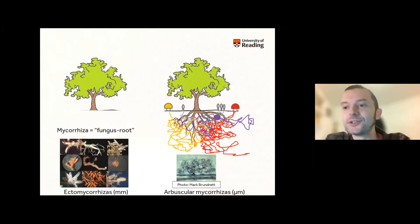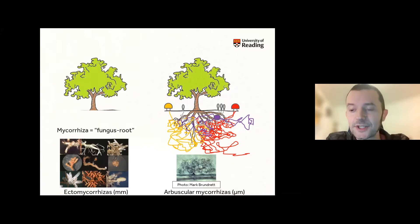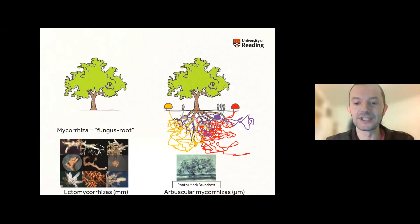You can see ectomycorrhizas with the naked eye. If you go dig around in the soil underneath some pines, you'll probably find lots of very visible mycorrhizal fungi. Then there are also arbuscular mycorrhizas, which you can't see with the naked eye, but if you get a hypermicroscope and look at the cells in plant roots, you might see some of these little arbuscule structures inside individual plant cells.